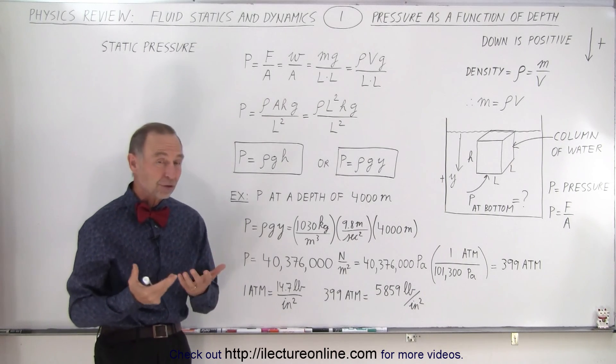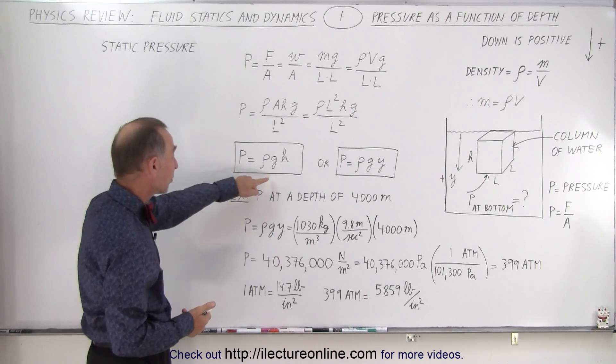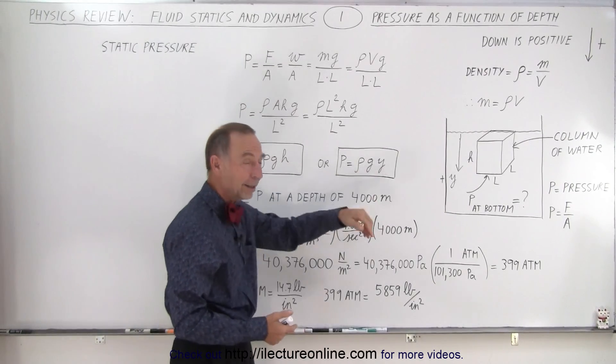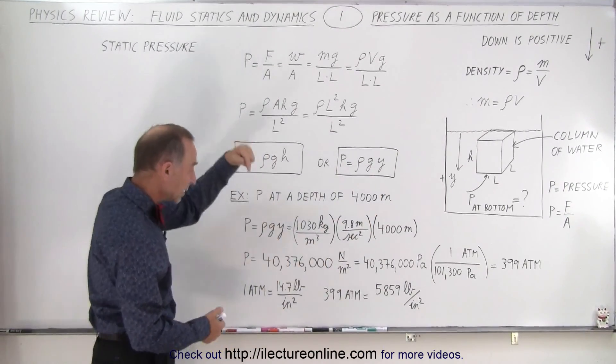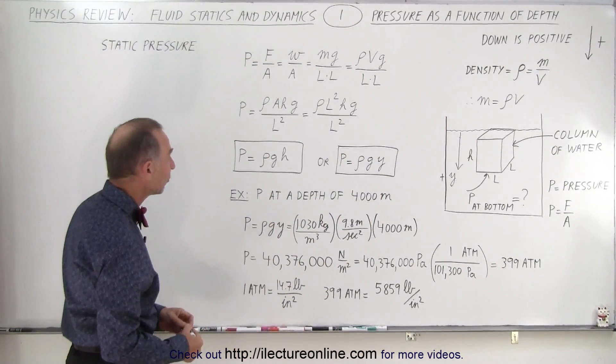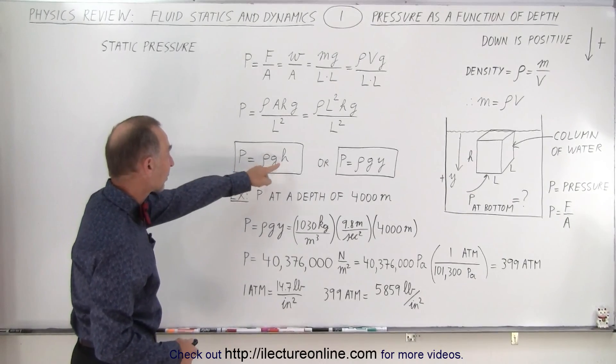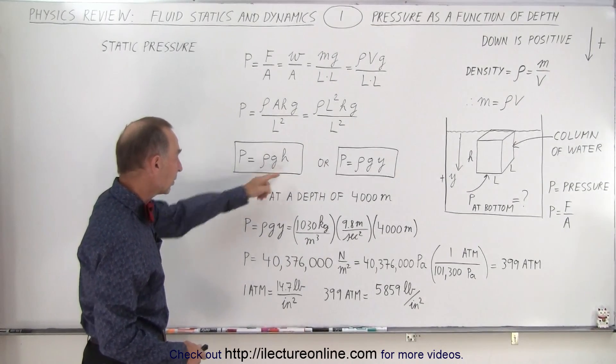To calculate the pressure inside a fluid, we use this equation: ρgh or ρgy, where y or h is the depth of the column. We take the density of the liquid times acceleration due to gravity times the depth into the liquid.